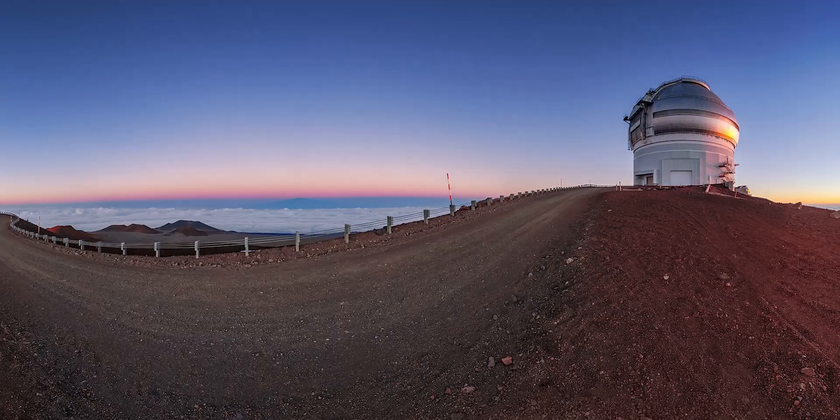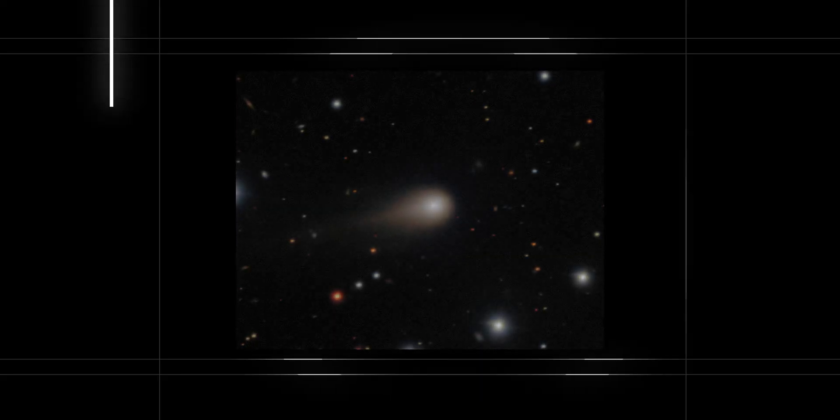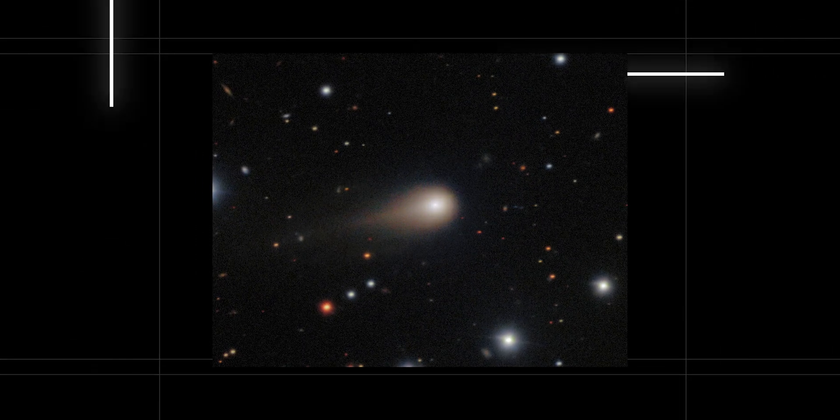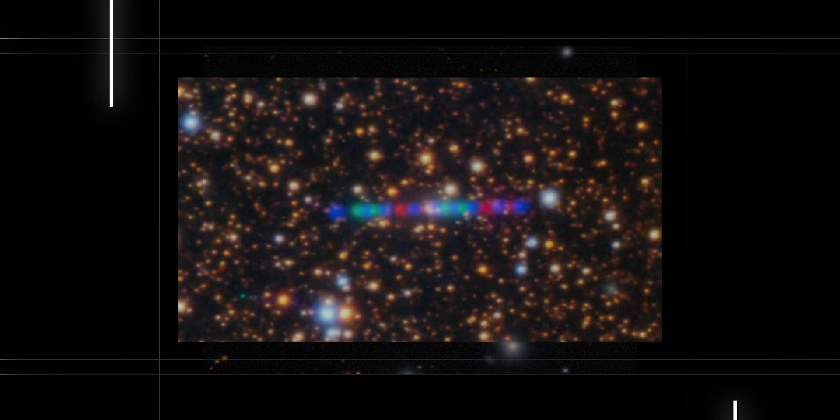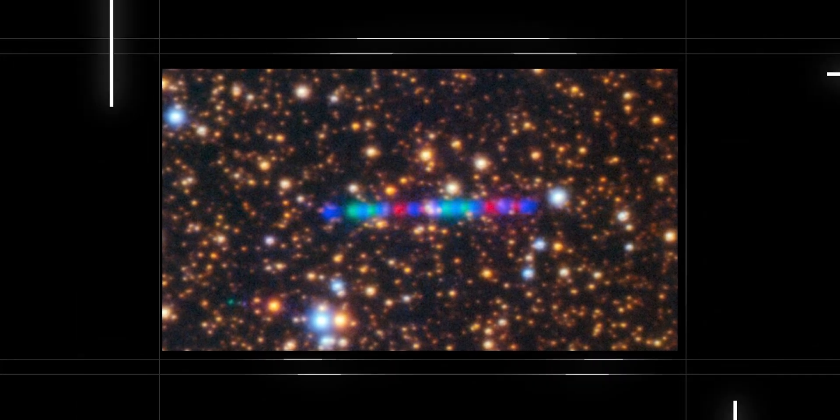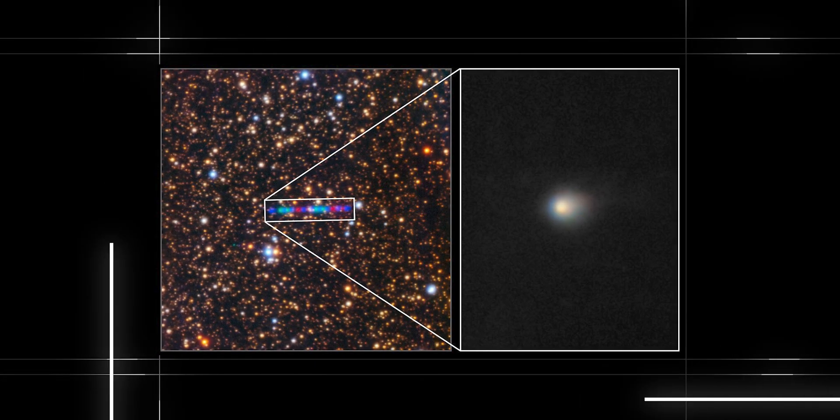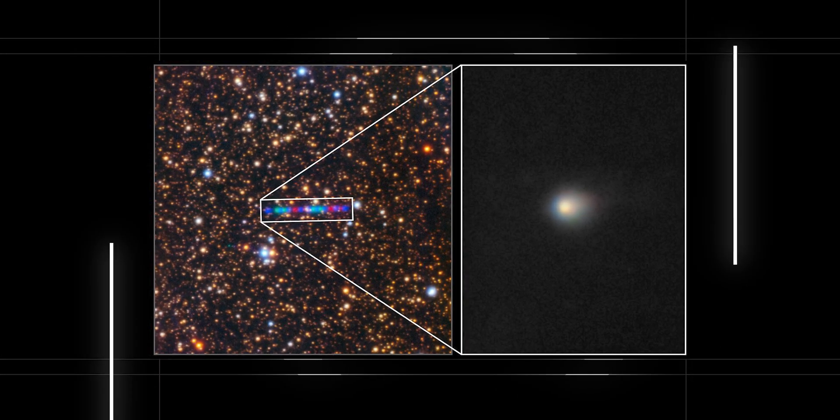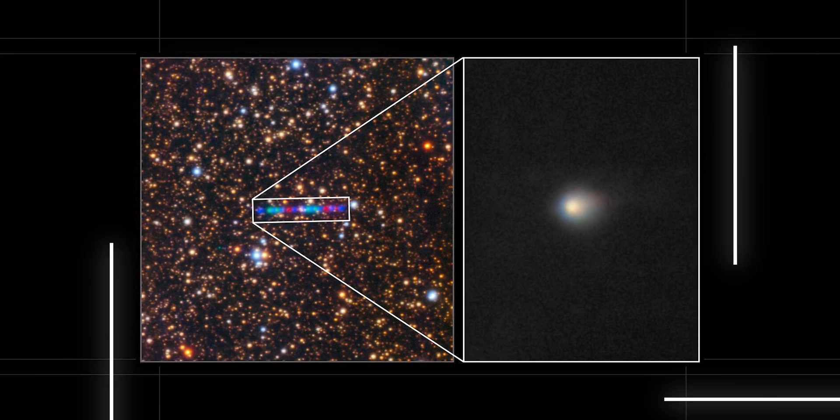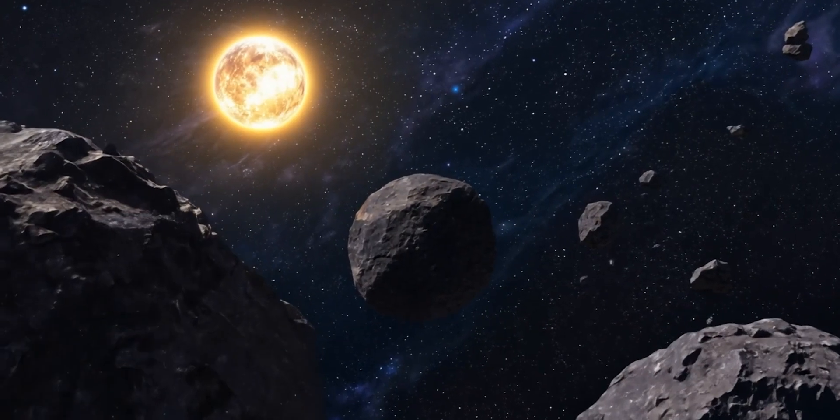And then came the Gemini South Observatory in Chile. On August 27th, it caught a clearer glimpse of the coma's structure and, for the first time, a visible tail. Spectroscopy revealed strong cyanide emission lines, proof that sunlight was now breaking apart molecules in the coma. But one expected signal, diatomic carbon, was almost absent. The ratio of C2 to CN measured below 0.1, placing 3I Atlas among the most carbon-chain depleted comets ever seen.